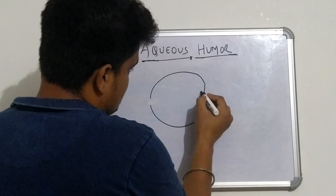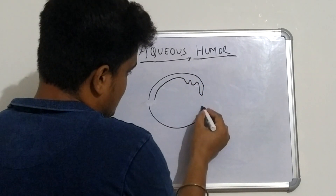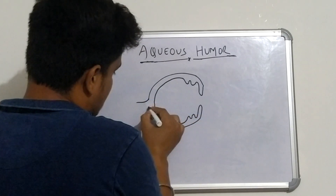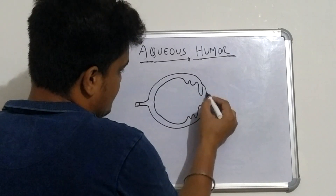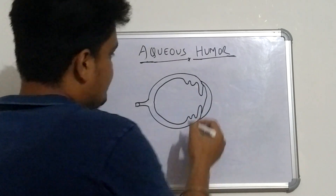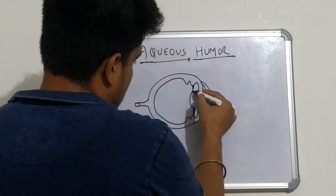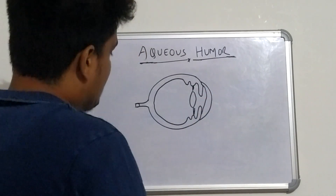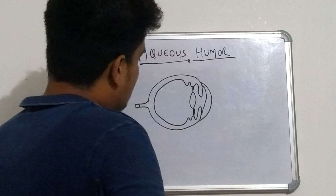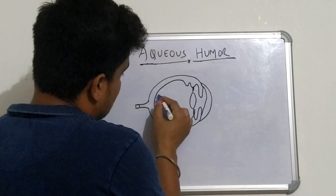In the diagram, this is the iris and the ciliary body. We have the cornea here, and in between there is the crystalline lens. In this area we have the retina.